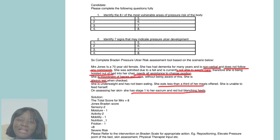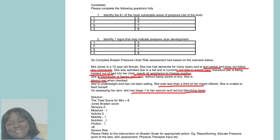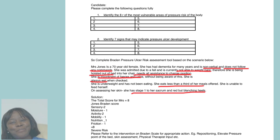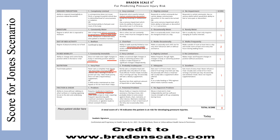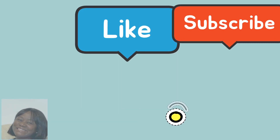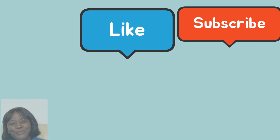We have a scenario posted on the chart — that is for Jones. Based on the scenario, Jones has a total score of eight. Give it a practice and please post your answers and questions on the platform. Thank you for watching. Keep the likes and subscriptions coming, and we hope to bring more tips to help you succeed in your OSCE journey. Bye for now.